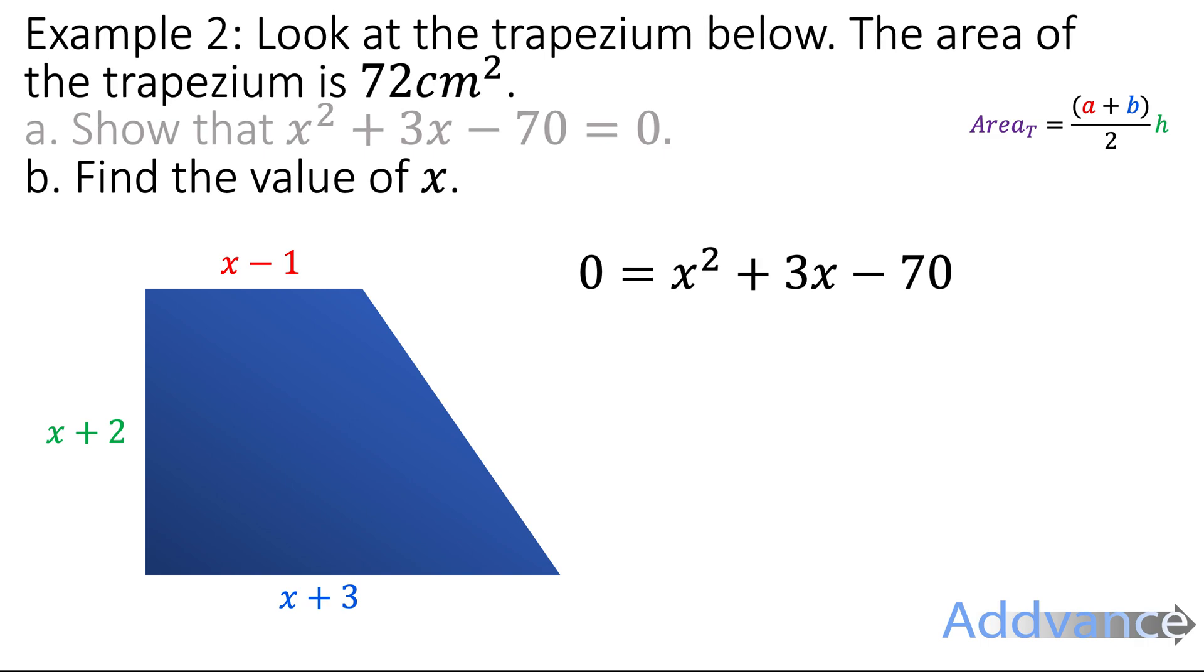Now question B. We're going to have to solve the equation to find the value of x. We start by factorising the quadratic: (x + 10)(x - 7) = 0. And then we remember that we make each bracket equal to 0. So x + 10 = 0 gives us x = -10, and x - 7 = 0, therefore x must be 7.